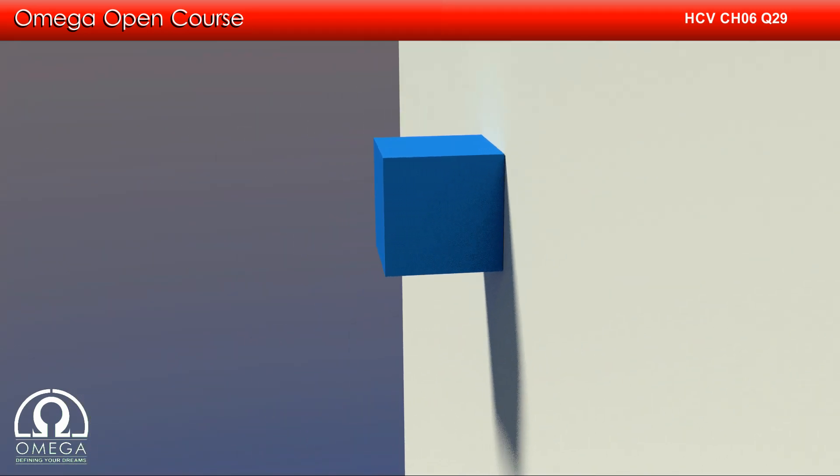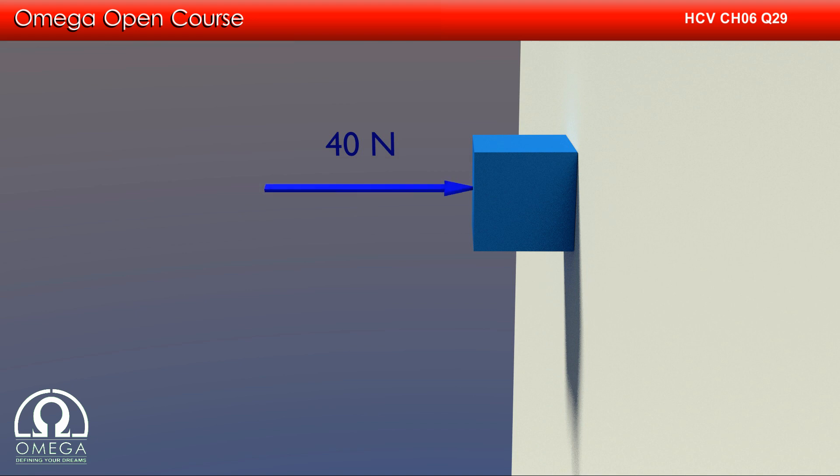This is the block on the wall. A horizontal force of 40 N perpendicular to the wall is being applied on it. Since the block cannot move through the wall, the normal force exerted by the wall must balance this force. Therefore the normal between the block and the wall is 40 N.